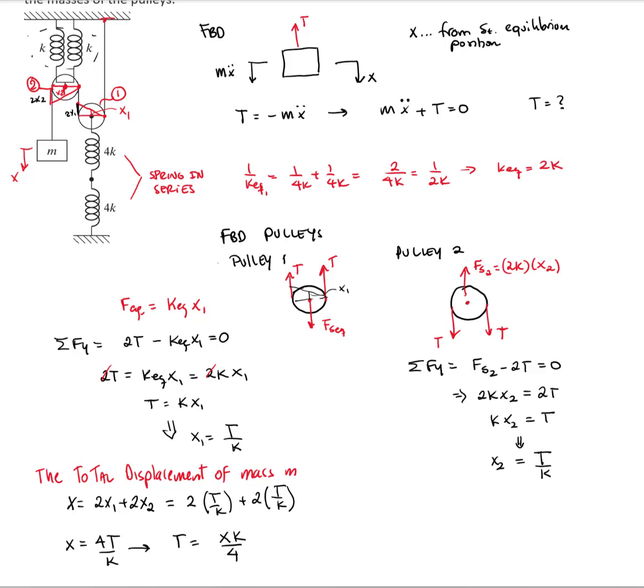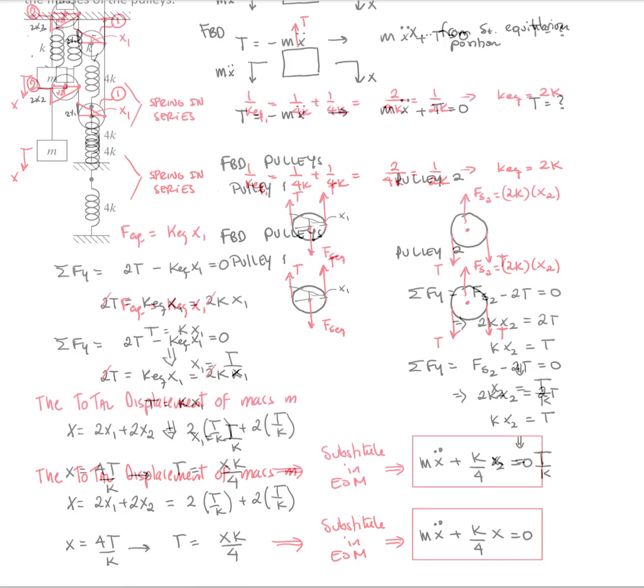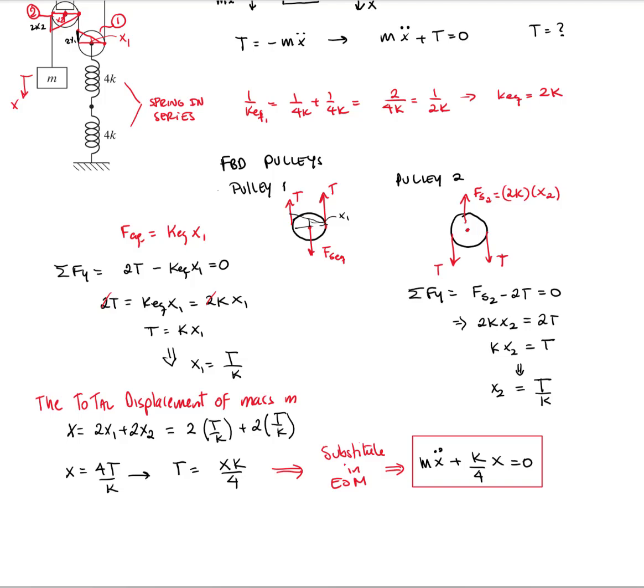I will substitute that into the equation of motion. And I have m x double dot plus k over 4 x equals to 0. This is the final equation of motion of the system. And with that, I can calculate the natural frequency. The natural frequency is k equivalent divided by mass equivalent. That will be k over 4 divided by mass, and that's the natural frequency of the system. And this is the solution of the problem.